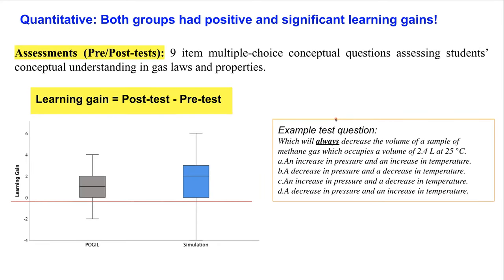Here are the quantitative results. We measured learning gain as posttest minus pretest, using a nine-item multiple-choice conceptual test validated through pilot testing with a large number of students. Looking at the box plots — where each box represents 50% of students — most students increased from pre to post after the activity in both groups, and the two groups performed relatively similarly overall.